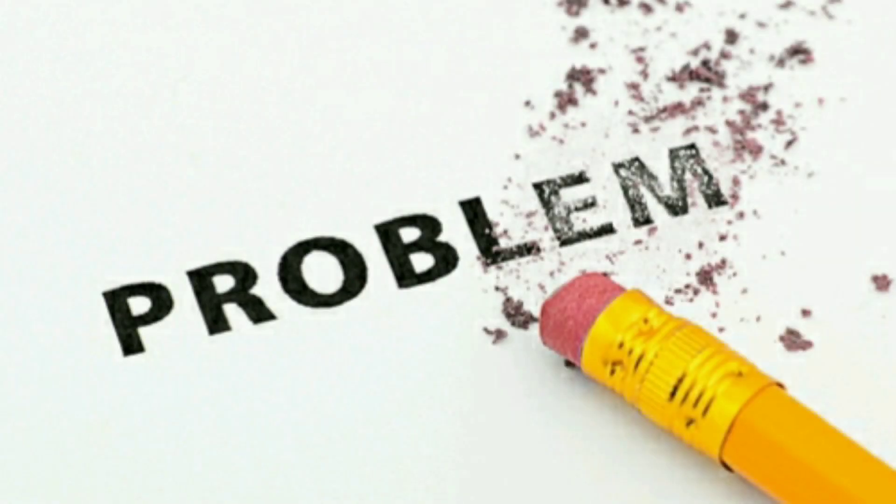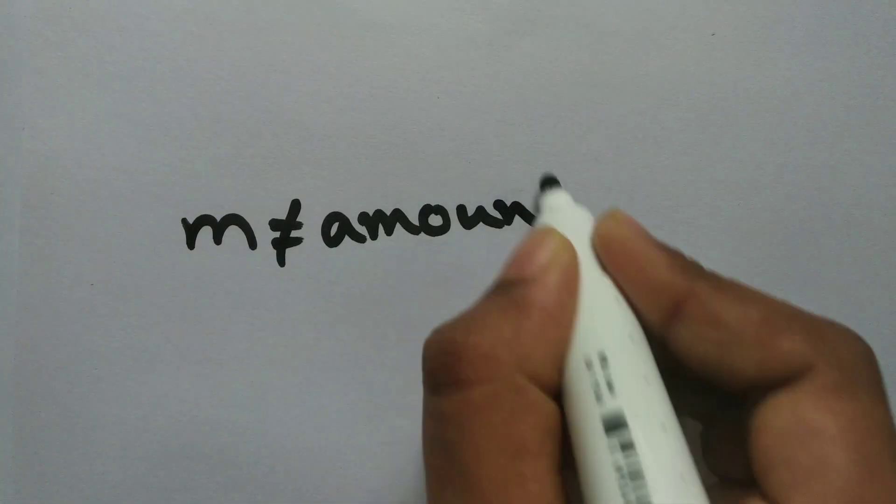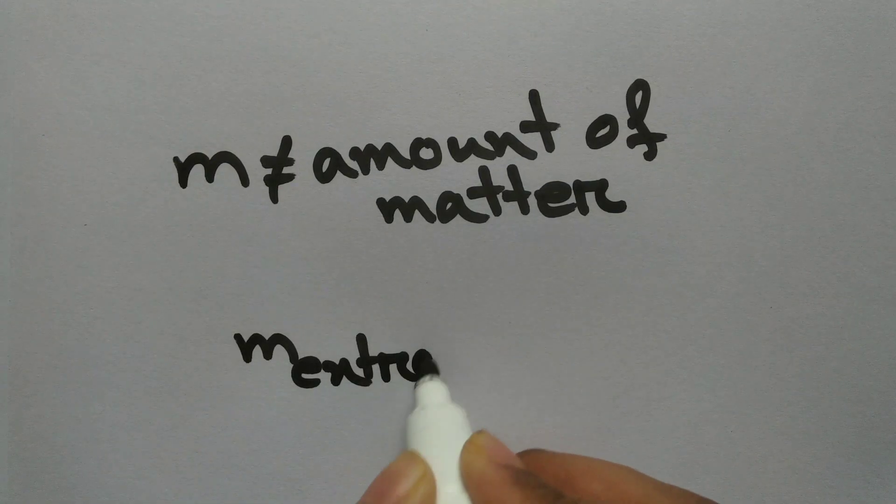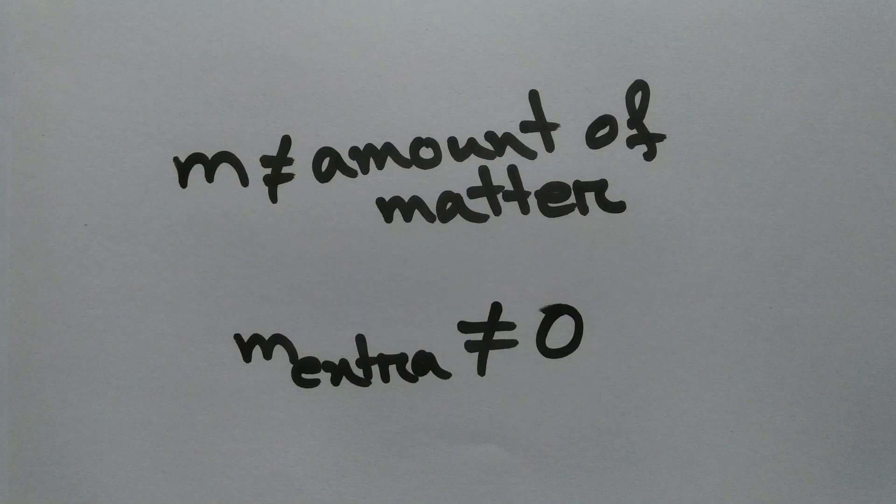And there we go. This is the problem that we mentioned earlier. Most of us think mass is the amount of matter, but it's not. There will always be some extra if it's moving. It's small, but it's not zero.